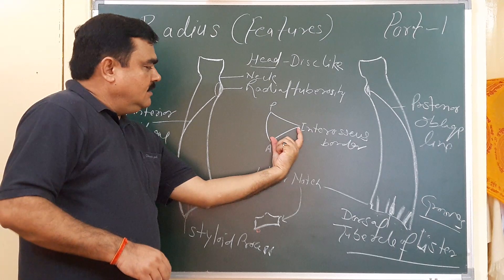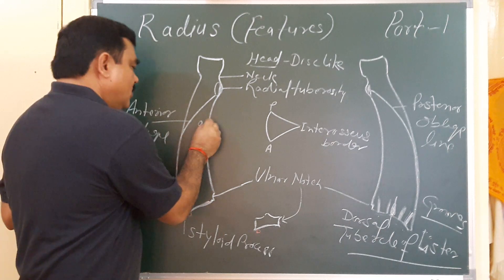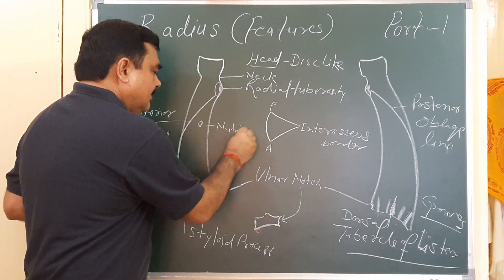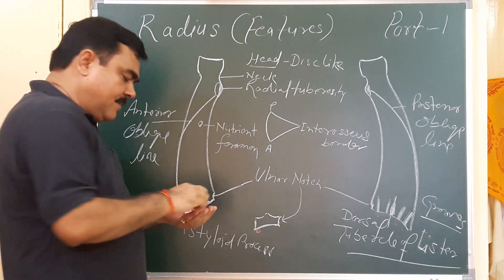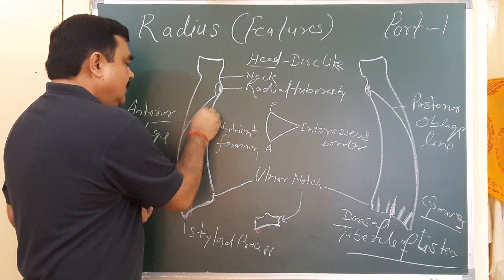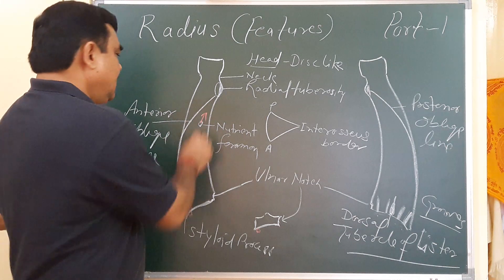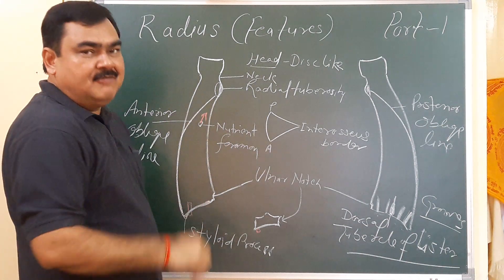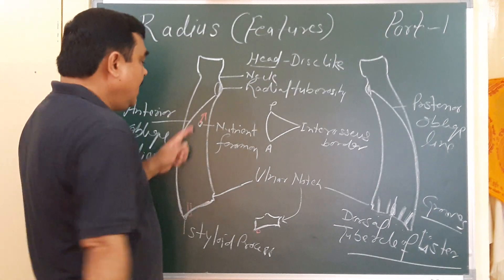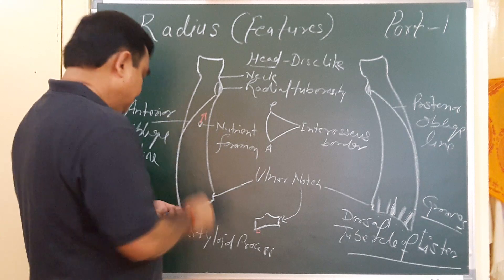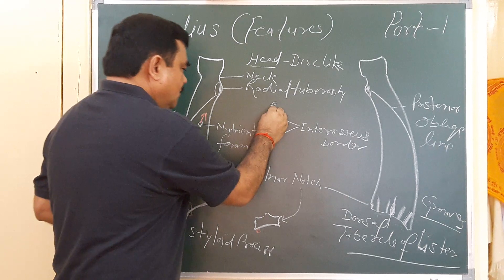The shaft has an anterior surface, a lateral surface, and a posterior surface. On the anterior surface, a nutrient foramen is present, directed upward. The nutrient branch of the anterior interosseous artery passes through this nutrient foramen and goes into the bone toward the lower end.